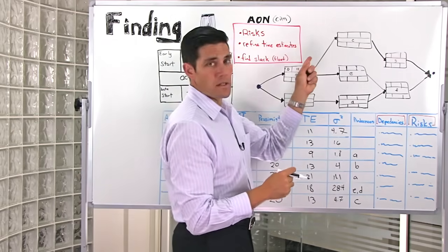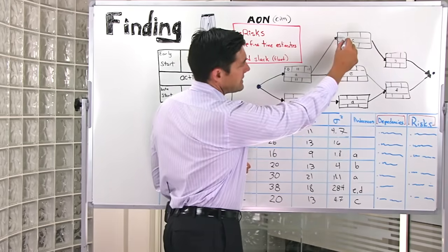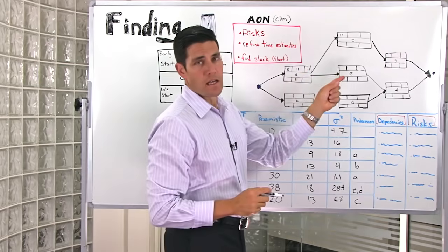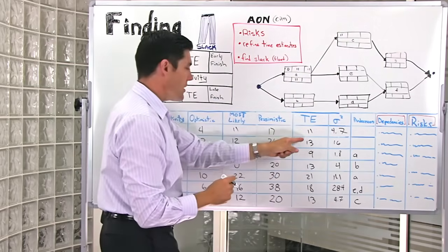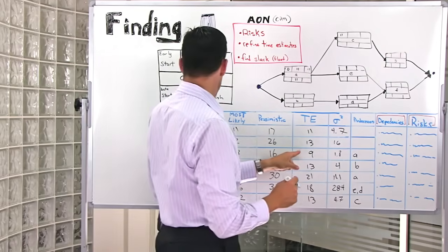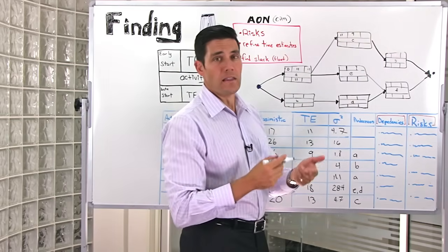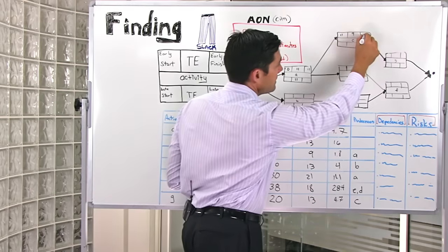Now we'll go to the successor task of that task, which is C. In task C, on the early start, we put 11, because that's the earliest time that project activity can actually start. We know from our chart, when we've worked out with our project team, the expected time for C is nine days. So we can again calculate the early finish for activity C, which is quite simply 20.